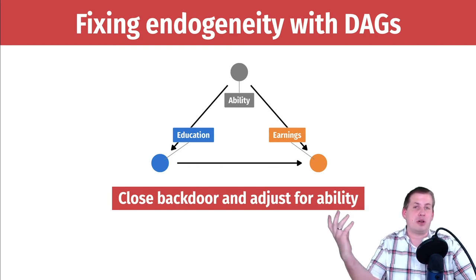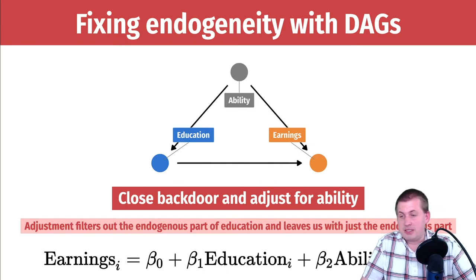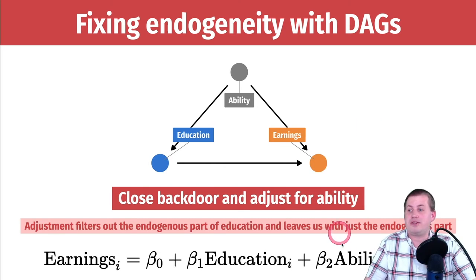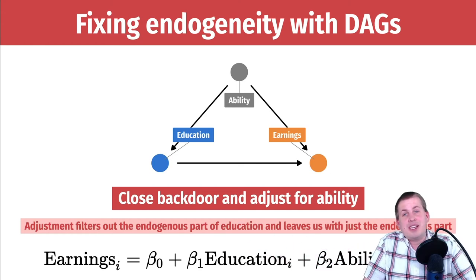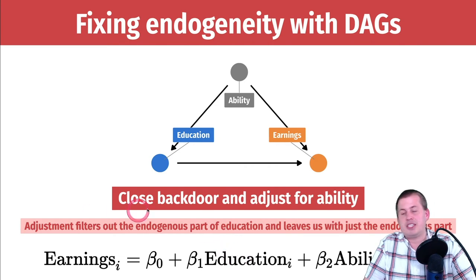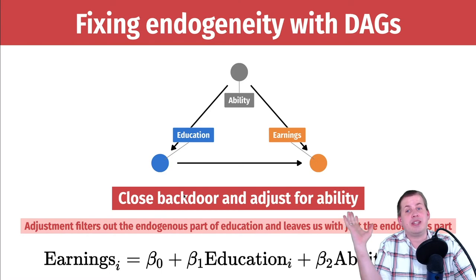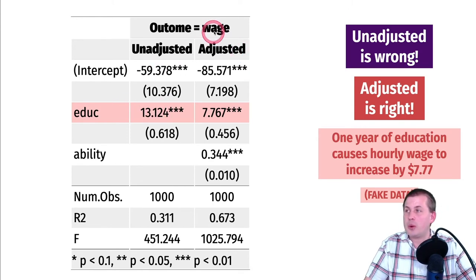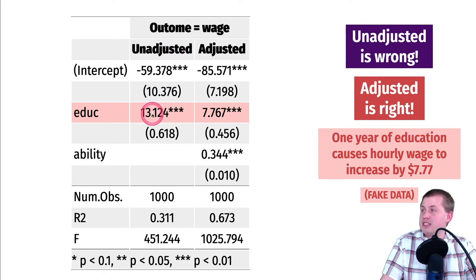If we could somehow adjust for ability, that would remove the endogenous part and leave us with just the exogenous part, telling us the effect of education on earnings. There are lots of different ways to do adjustment. We could use a regression model where we control for ability as a control variable. However, that's probably not the best approach because you have to assume all relationships are linear, which is rarely the case. Instead, you can use matching or inverse probability weighting to adjust for ability and find the causal effect.